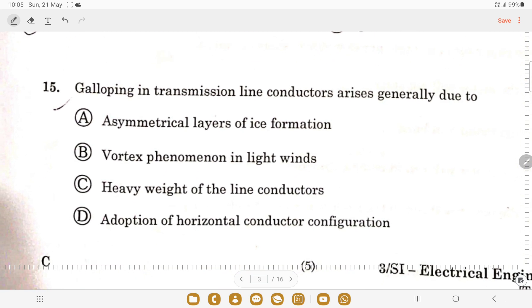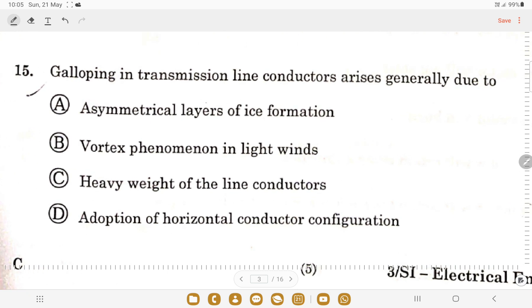Last question of this session: galloping in transmission line conductors arises generally due to? Galloping in a transmission line is due to the formation of ice in the transmission line. So option A is correct - asymmetrical layer of ice formation.